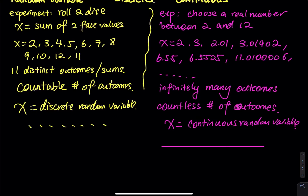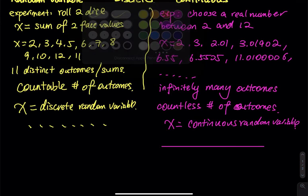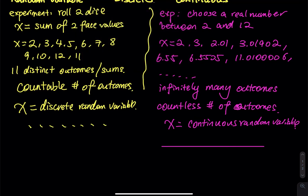On the other side, can you count the number of dots on that pink line? The answer is no, because the line contains infinitely many dots. I am not able to use my finger to count them. But one thing I can do is measure it — it's not countable, but it's measurable. The dots are countable; the line is measurable. So the key distinction is countable versus measurable.